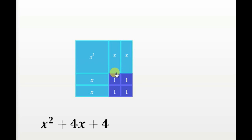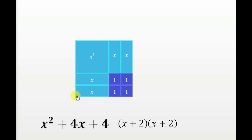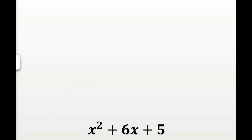So according to this, the polynomial x squared plus 4x plus 4 equals (x plus 2) times (x plus 2). We have easily factorized our polynomial. Now let's try another polynomial. The next polynomial is x squared plus 6x plus 5. Why don't you give it a try — model it and arrange the tiles in a rectangular form?